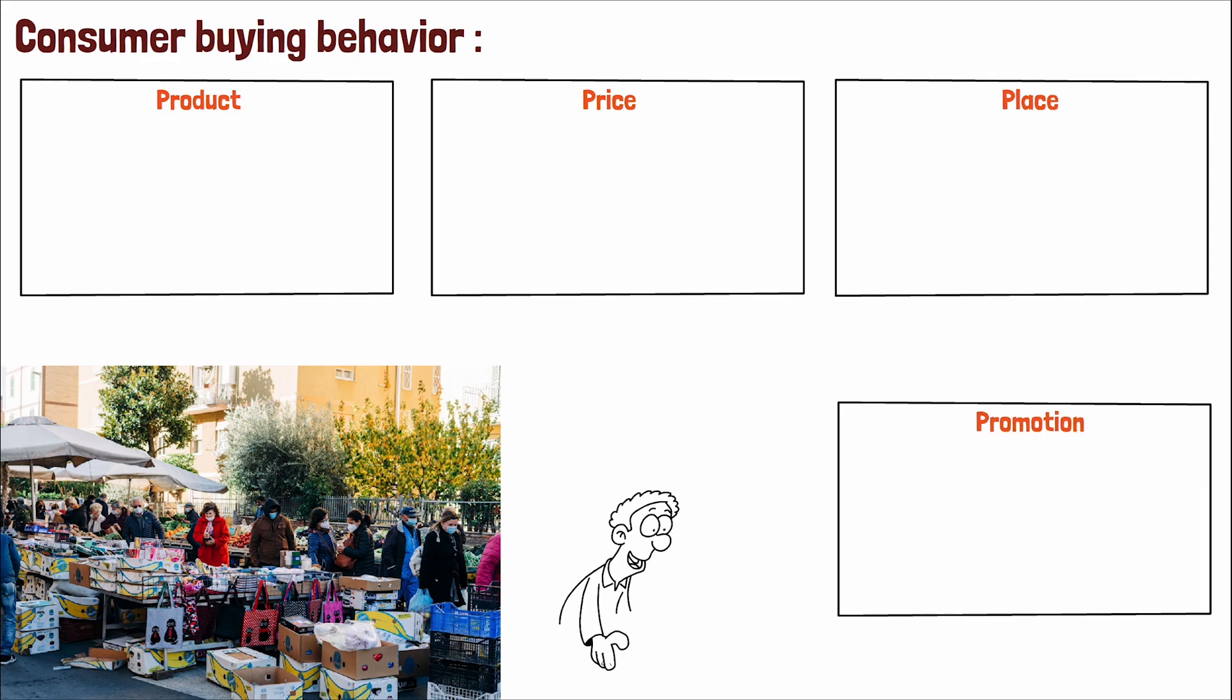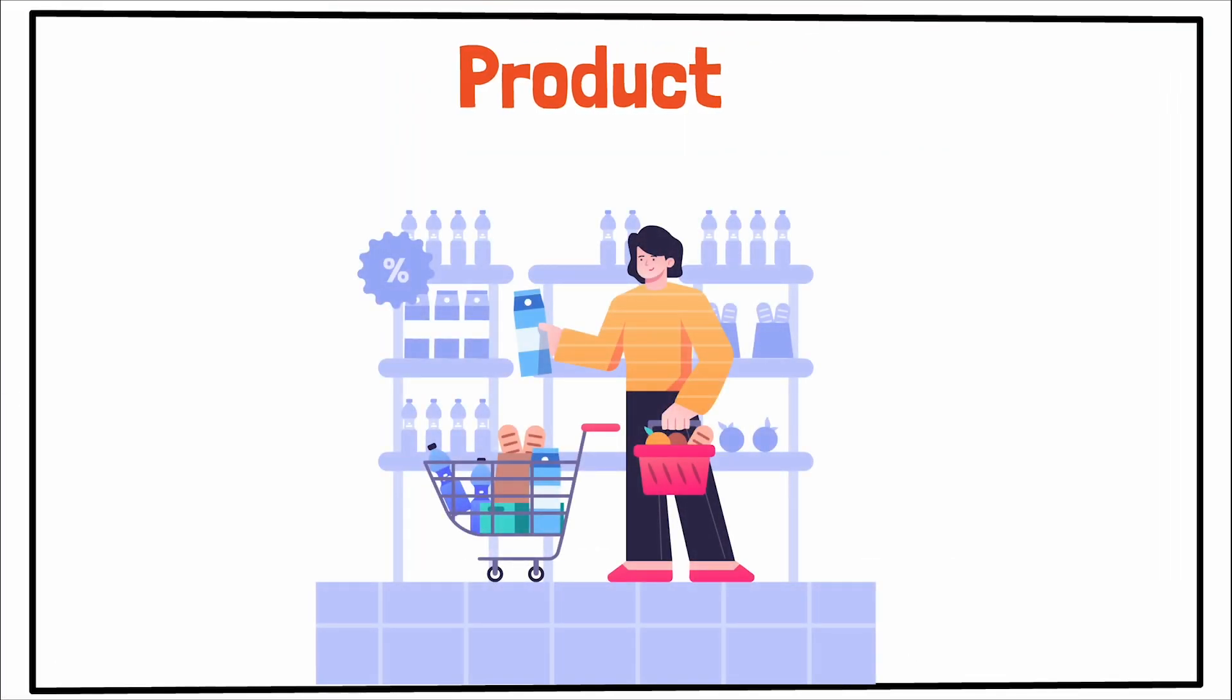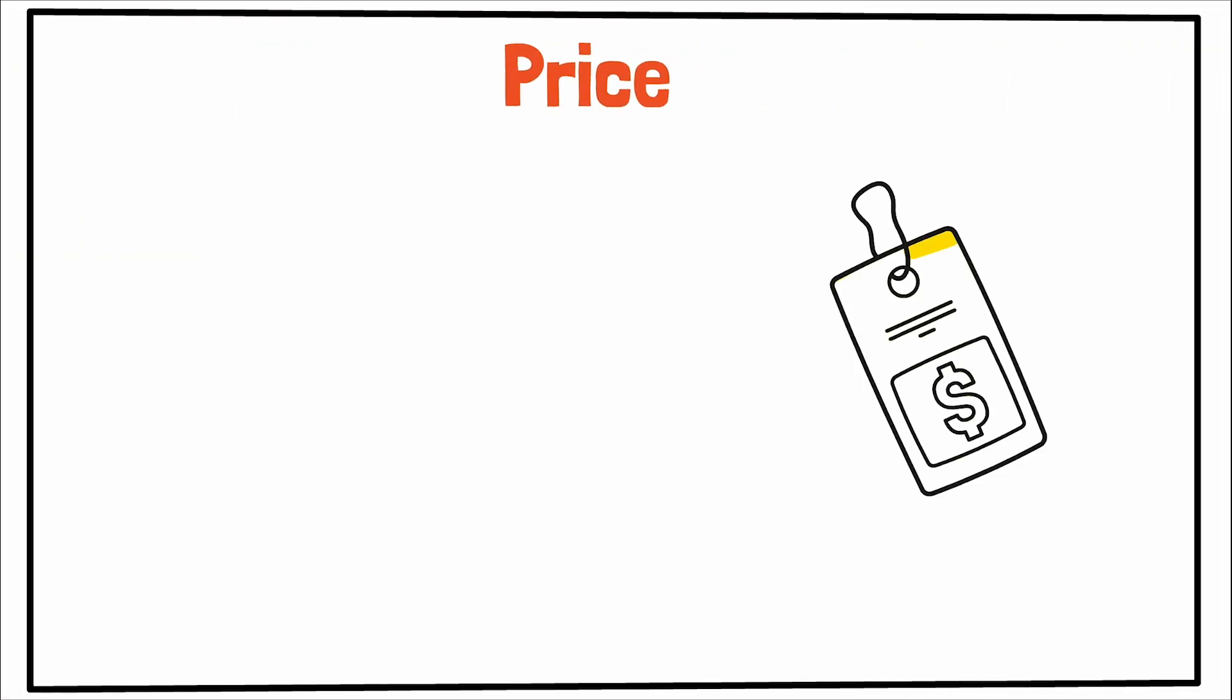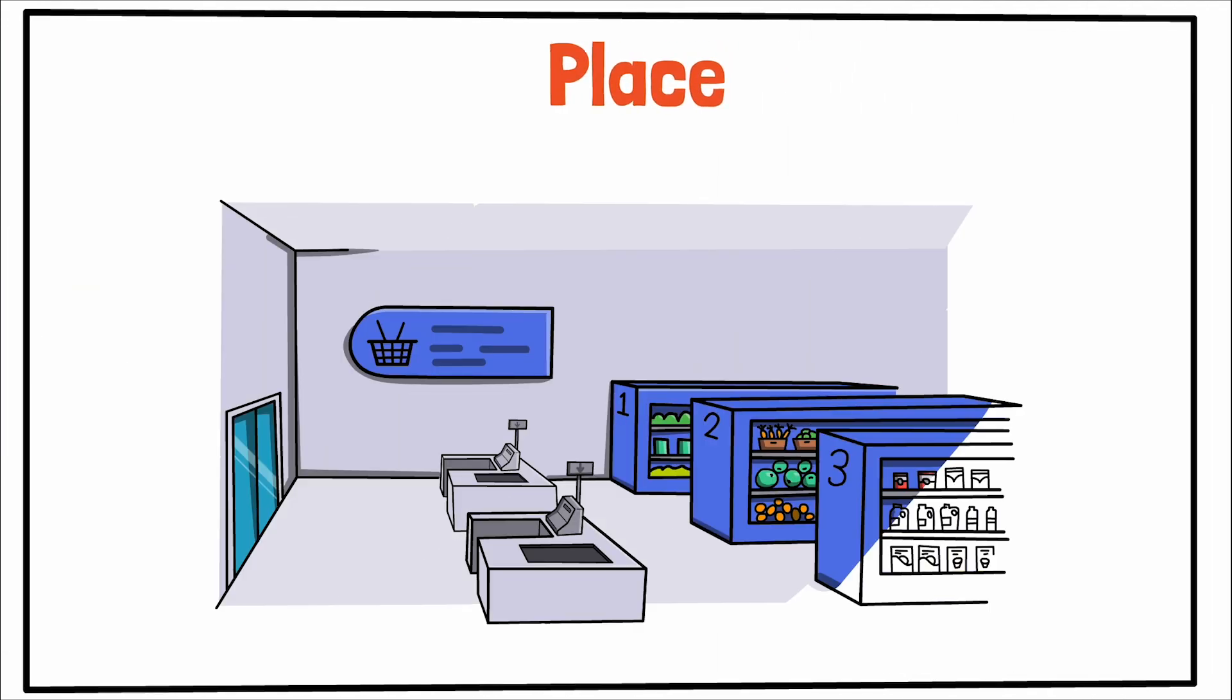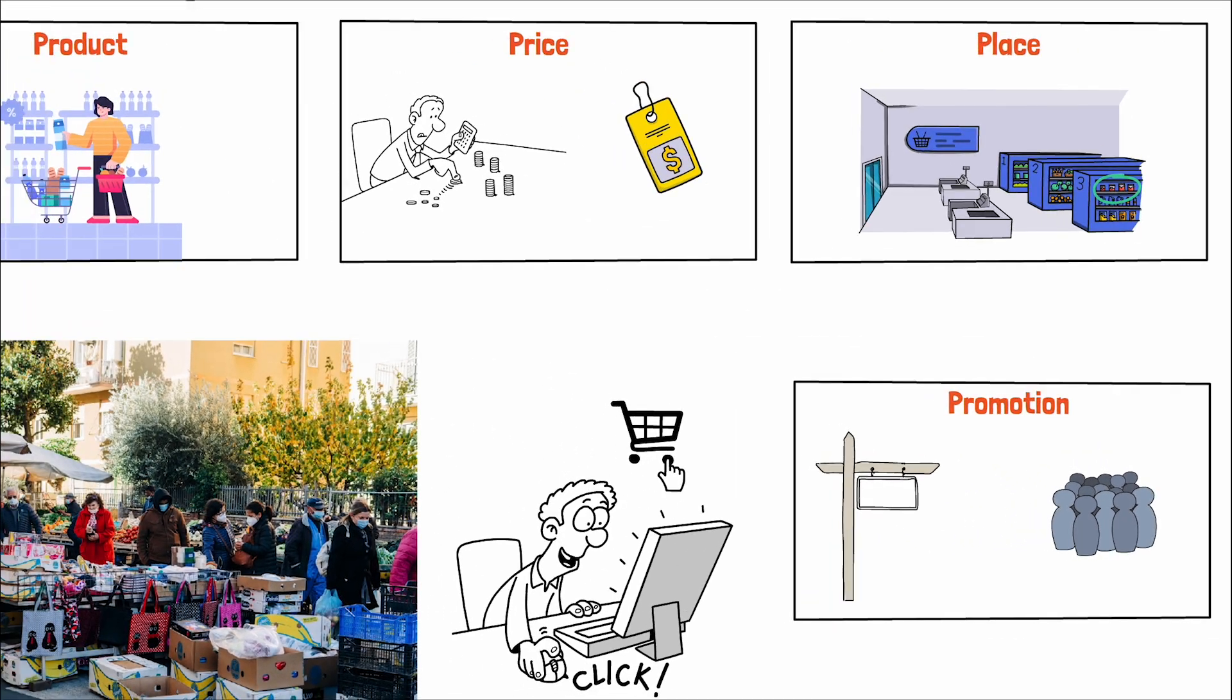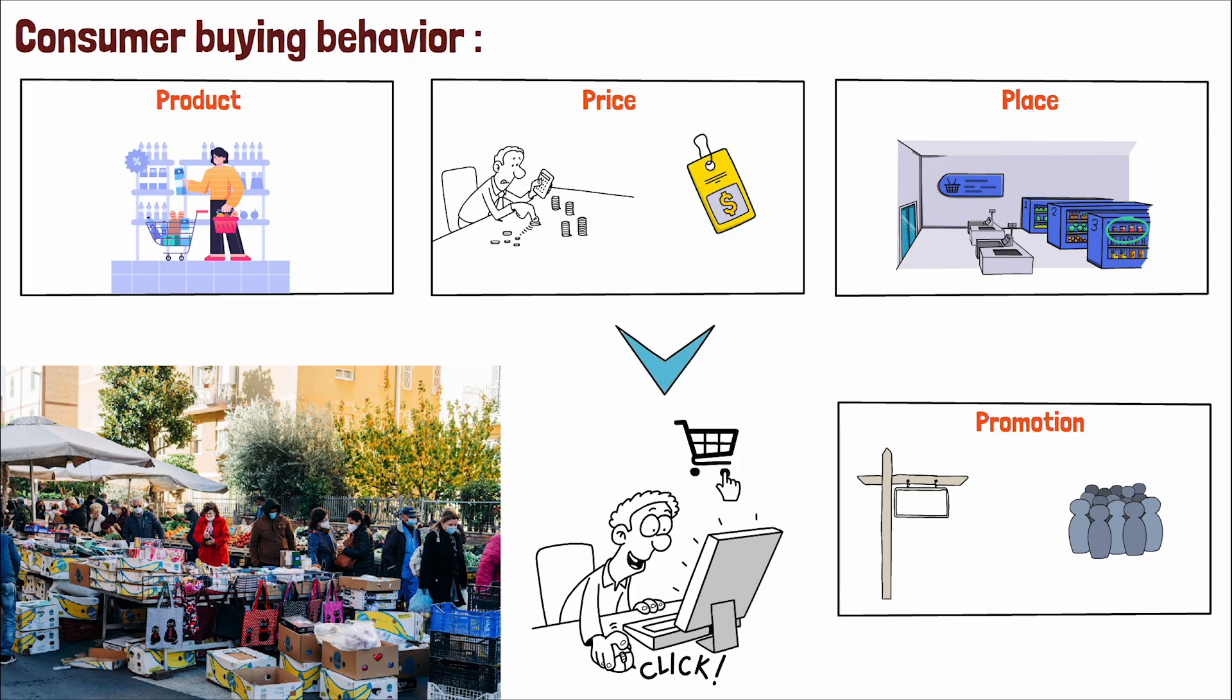Each P plays a specific role in attracting and persuading consumers. Products must align with consumer needs and desires, while the price must reflect the perceived value and be within the economic reach of the target market. Place or distribution ensures that products are conveniently accessible and promotion encompasses the communication strategies used to inform and entice potential buyers. Together, these elements create a symphony that resonates with the consumer, leading them toward the decision to purchase.